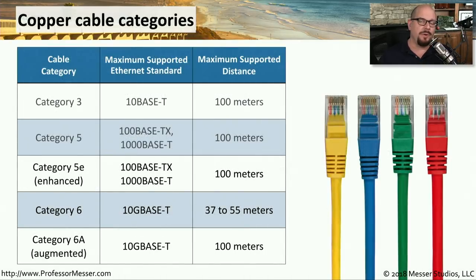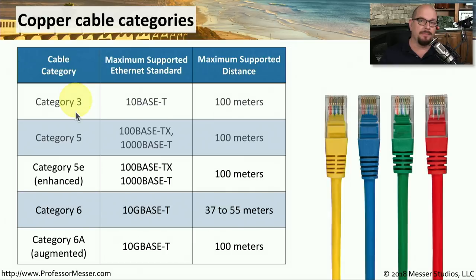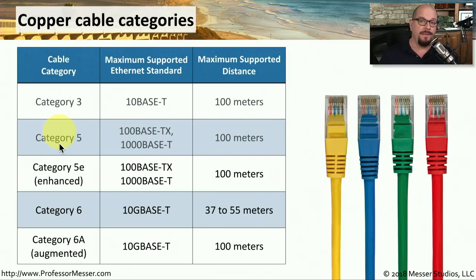These organizations have created standards for copper cabling that they call cable categories. This means that we, as the end user, can simply ask for the type of cable category we need for a particular purpose, rather than trying to find a cable with a particular twist rate or ohm value. For example, when we needed to run 10 base-T Ethernet over 100 meters, the cabling we would need would be category 3. When speeds increased to 100 megabits and 1,000 megabits using the 100 base-TX or 1,000 base-T standards, we could run those to 100 meters using category 5 cabling.